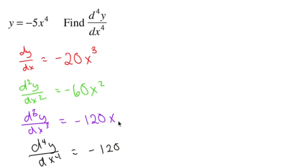1 minus 1 is 0, so x to the 0 is no more x. So there you have it, fourth derivative.